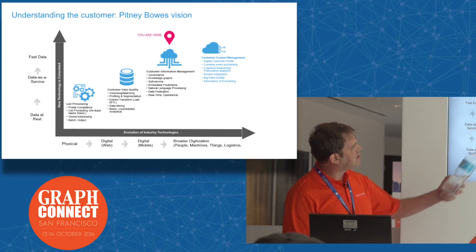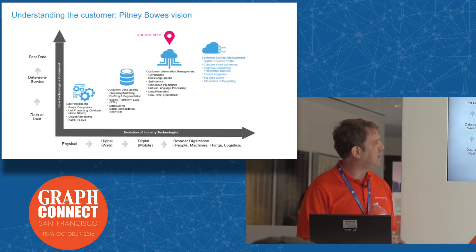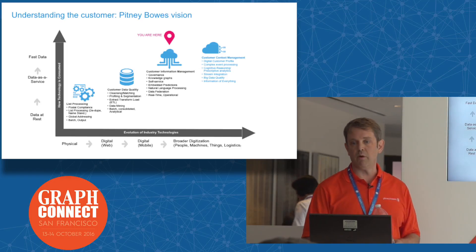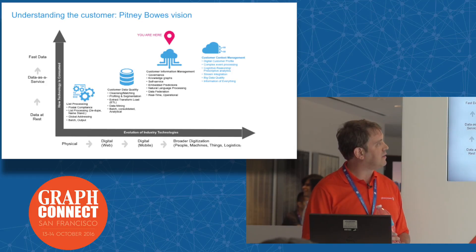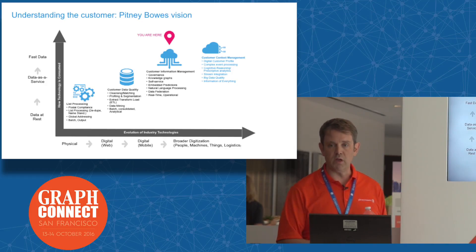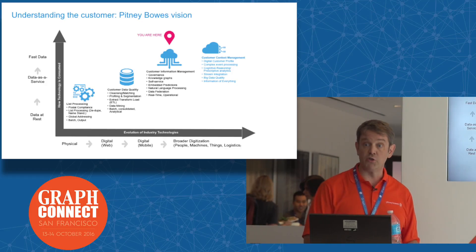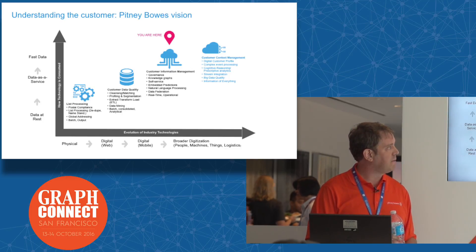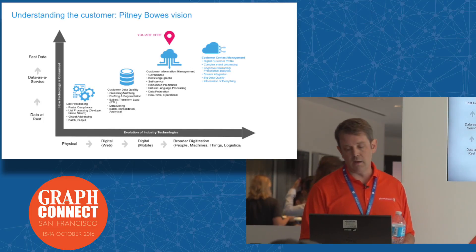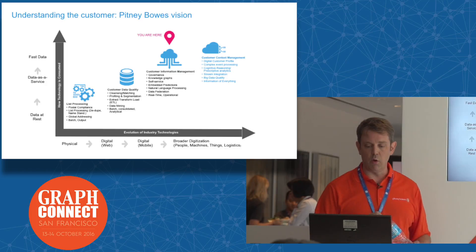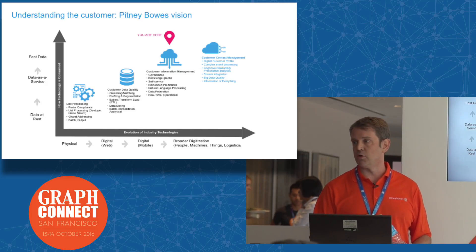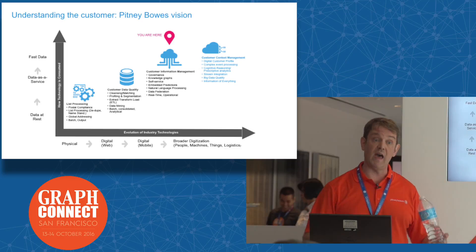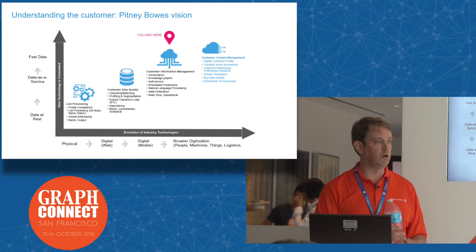Where we are today — marked by the little red indicator here — is in the business of customer information management. This is where we've really dove into the knowledge graph concept and begun partnering quite heavily with Neo4j. One of the newer things we're working on is dealing with unstructured data and natural language processing, treating that as a data source for your enterprise as well.